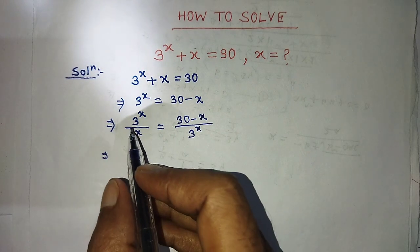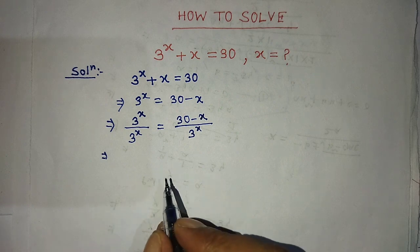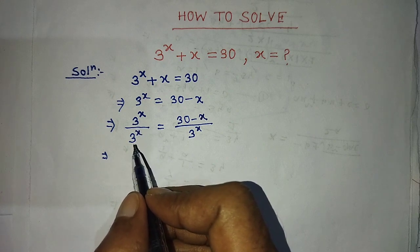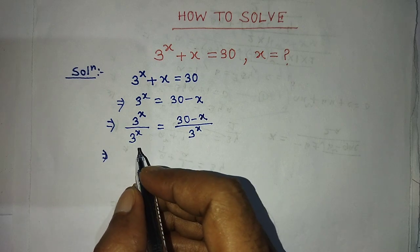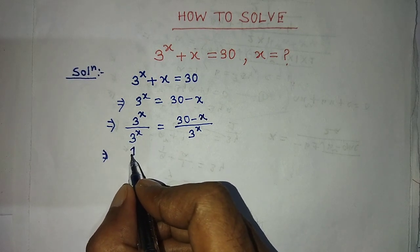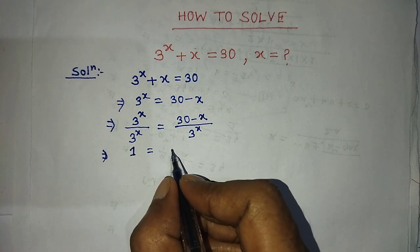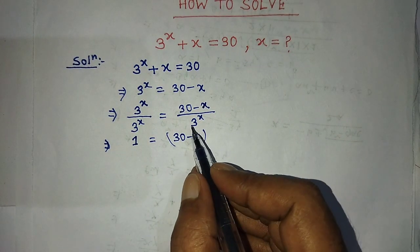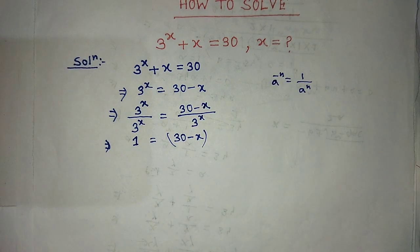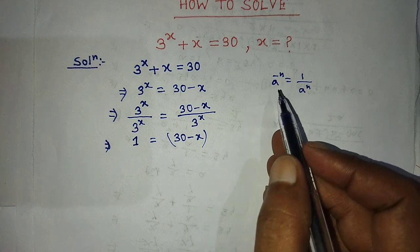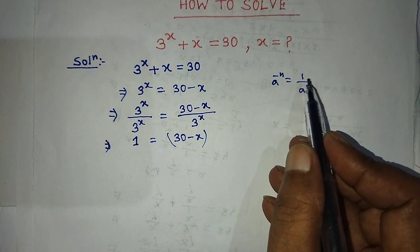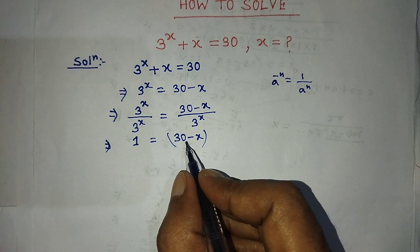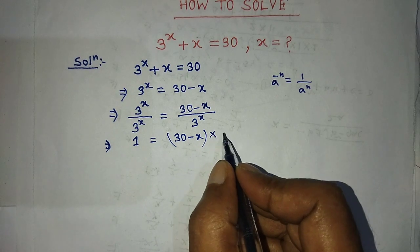On the left hand side, 3 to the power x over 3 to the power x — the numerator and denominator are the same terms, so dividing same by same gives us 1. So 1 is equal to on the right hand side: 30 minus x, with 3 to the power x in the denominator. We apply the formula a to the power minus n equals 1 over a to the power n, giving us 30 minus x times 3 to the power minus x.